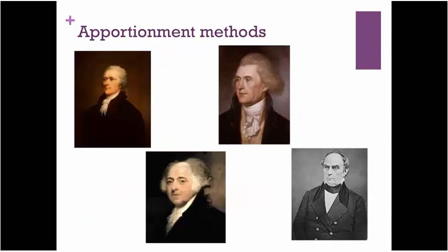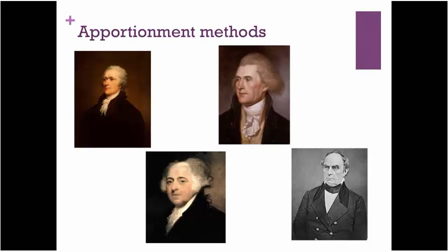We're going to look at various ways of solving this problem. We will call them apportionment methods. Right here, we're looking at the gentlemen for whom various of these methods are named. You look at these and say, well, those are people I know — those are famous figures in American history. Indeed, they are. Let's discuss them one at a time, beginning at top left.